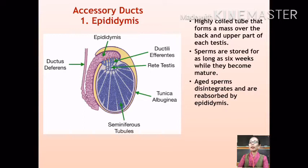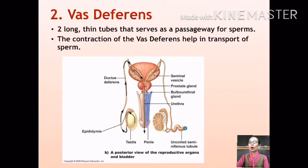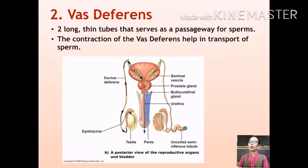The epididymis secretes important substances that help the sperm survive and mature, and the maturation time of sperms is approximately one week. The mature sperms are then transported from the epididymis to the two vas deferens during ejaculation. The vas deferens are a pair of long thin tubes about 30 centimeters in length, serving as a passageway for sperms from the epididymis into the ejaculatory ducts. Along the way, sperms pass through the scrotum, move upward around the urinary bladder, and pass through the seminal vesicles and prostate. The sperms are pushed upward by muscular contraction of the vas deferens and get mixed with fluids of the seminal vesicles, at which point the mixture is called semen.